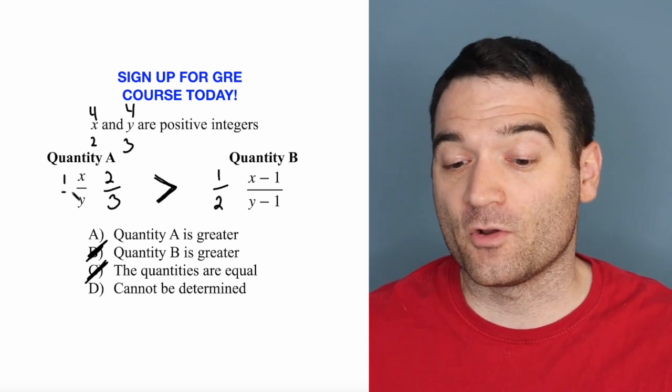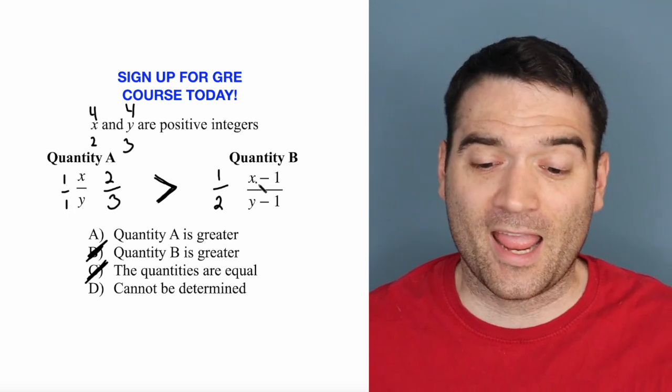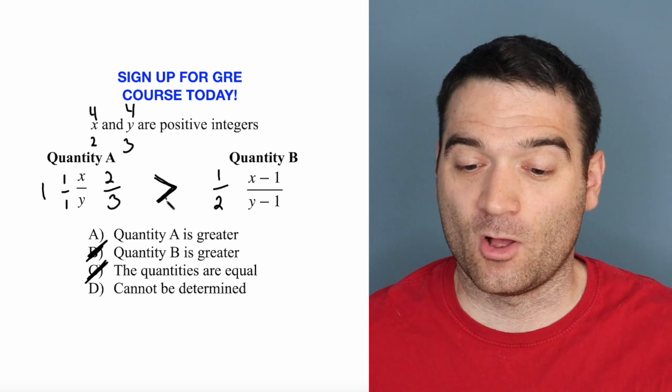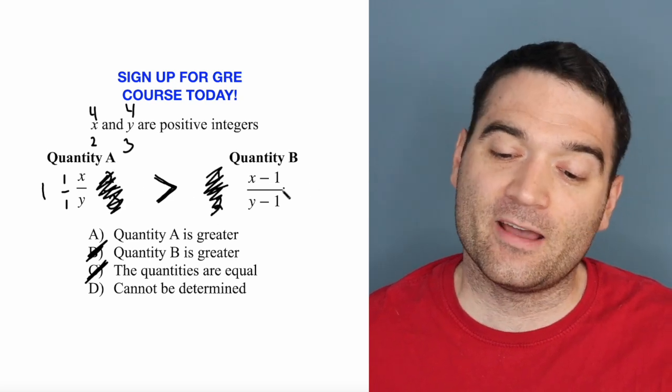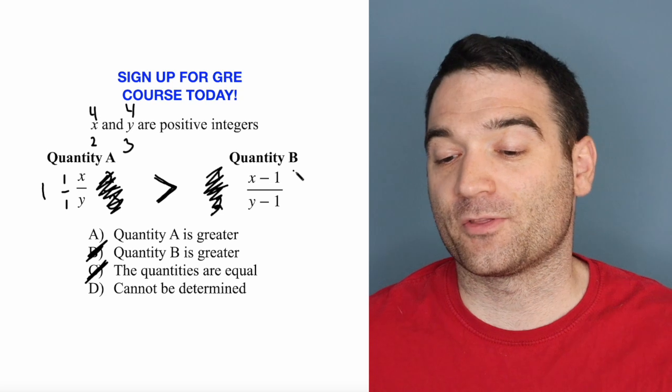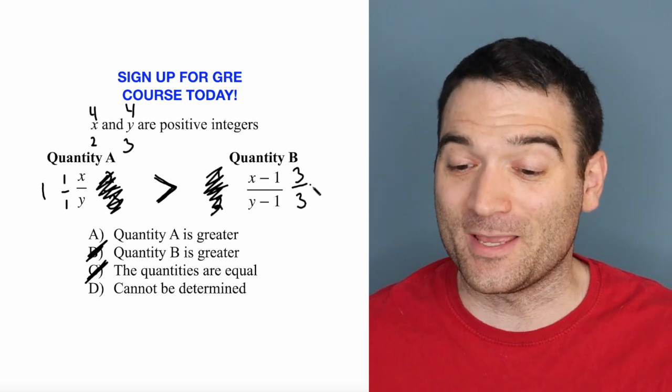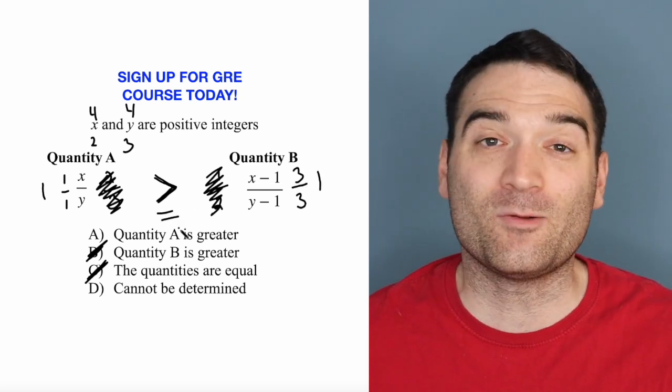So 4 over 4 is 1 over 1, which is equal to 1. I'll cross out our old example here because we're not using that one anymore. And then 4 minus 1 is 3 over 4 minus 1, 3 is also equal to 1. So I just found a case where they're equal.